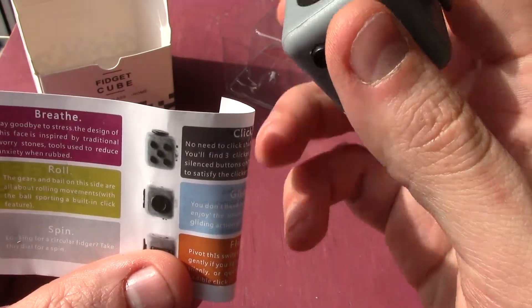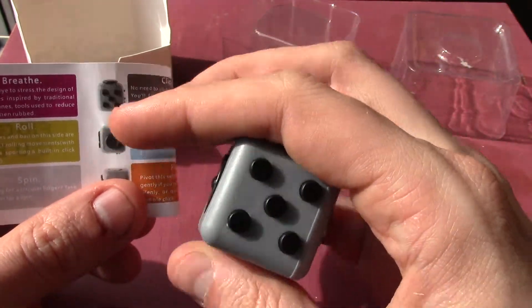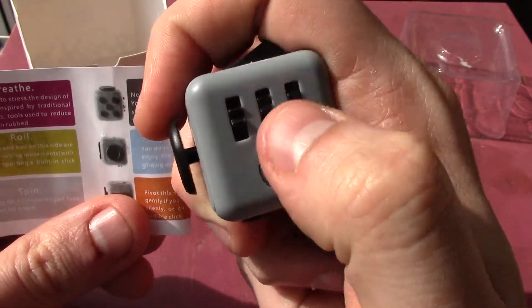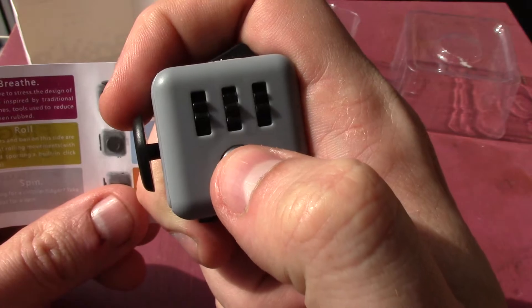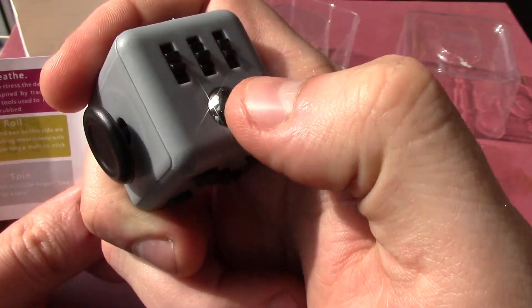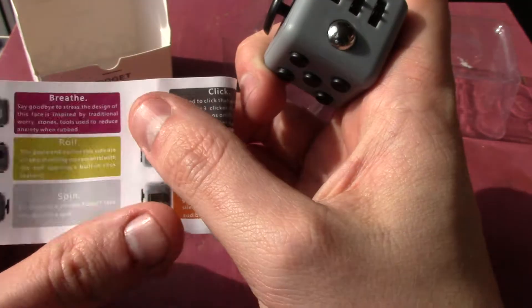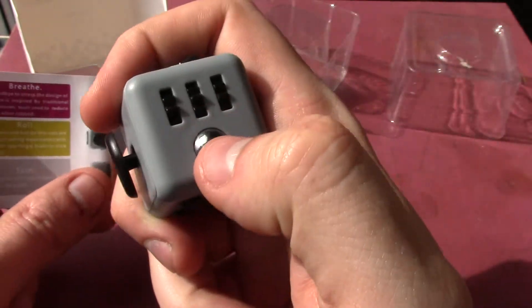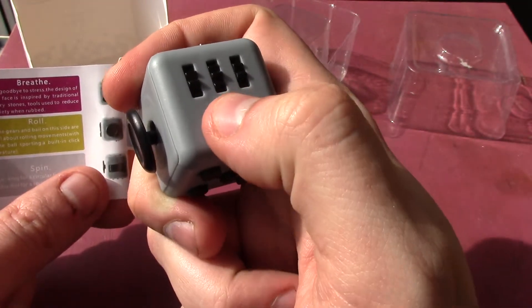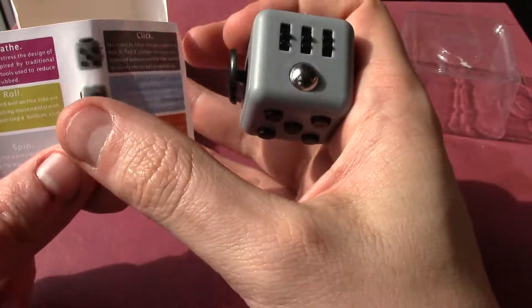Roll, that's the gears. The gears on the ball, on this side are all about rolling movements with the ball sporting a built in click feature. That doesn't work, it doesn't click in at all and I feel like if I did try and push it in I'd break it. So that's a lot of bollocks, it doesn't have a click feature.